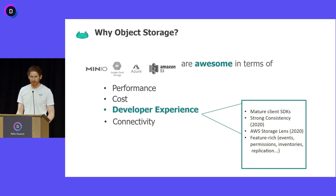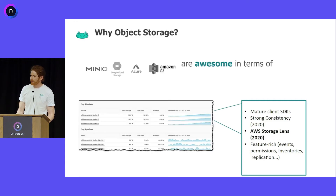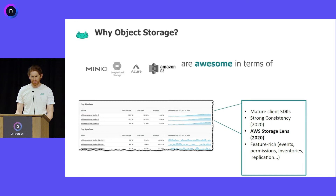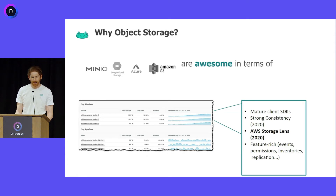Two newer features that have come out in the S3 ecosystem in the last few years are strong consistency — which means when you write an object, you're guaranteed for it to come back in a subsequent read, very impressive for such a large scale distributed system — and AWS Storage Lens, which gives you out of the box very nice usage graphs over time per bucket and per prefix. You don't have to set up this monitoring yourself; it helps you catch if some particular bucket's storage is out of control. Object stores also have a lot more features than just being Dropbox for developers: you can set up data replication policies, event notifications, and permissioning on the prefix level.